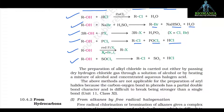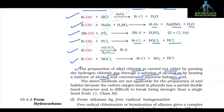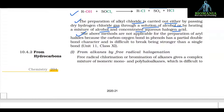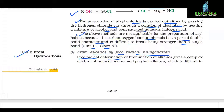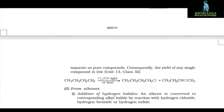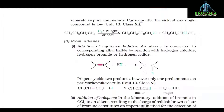The preparation of alkyl chloride is carried out either by passing dry hydrogen chloride gas through a solution of alcohol or by heating a mixture of alcohol and concentrated aqueous halogen acid. The above methods are not applicable for the preparation of aryl halides because the carbon-oxygen bond in phenols has partial double bond character and is difficult to break. 10.4.2 From hydrocarbons. Free radical chlorination or bromination of alkanes gives a complex mixture of isomeric mono and polyhaloalkanes which is difficult to separate as pure compounds. Consequently, the yield of any single compound is low.